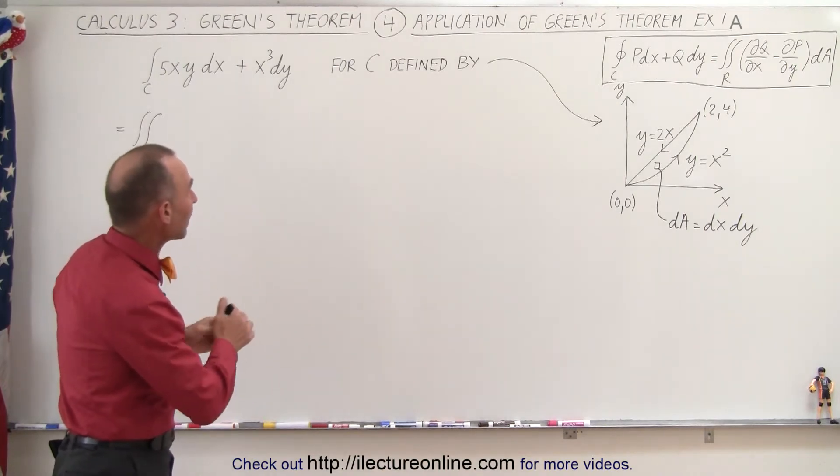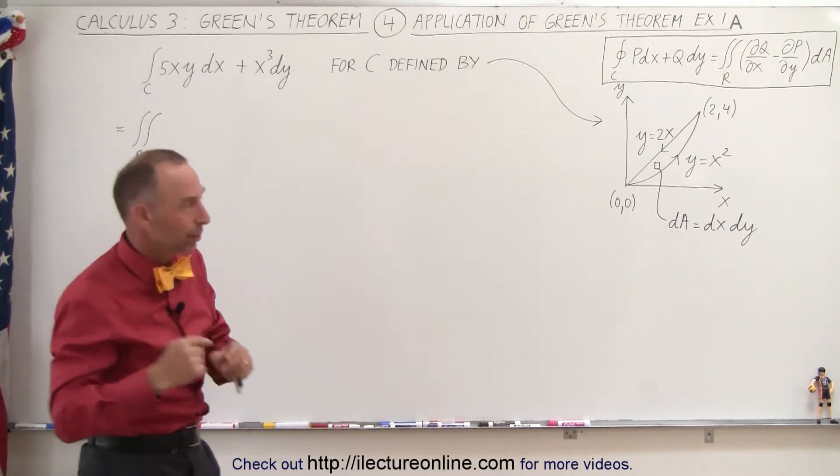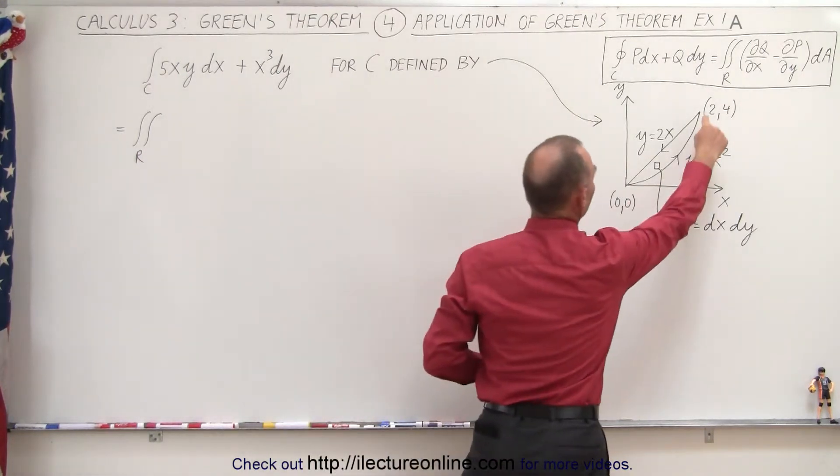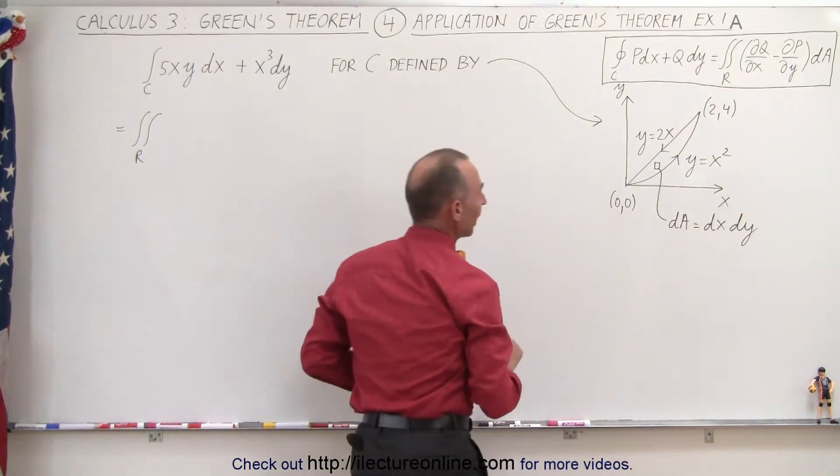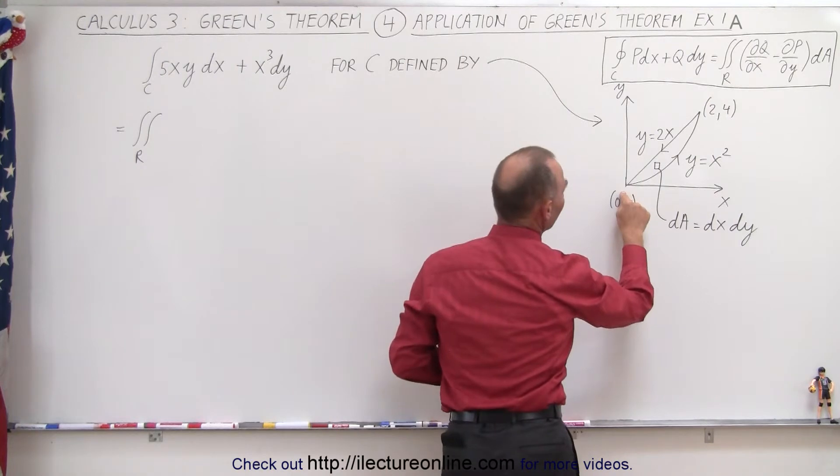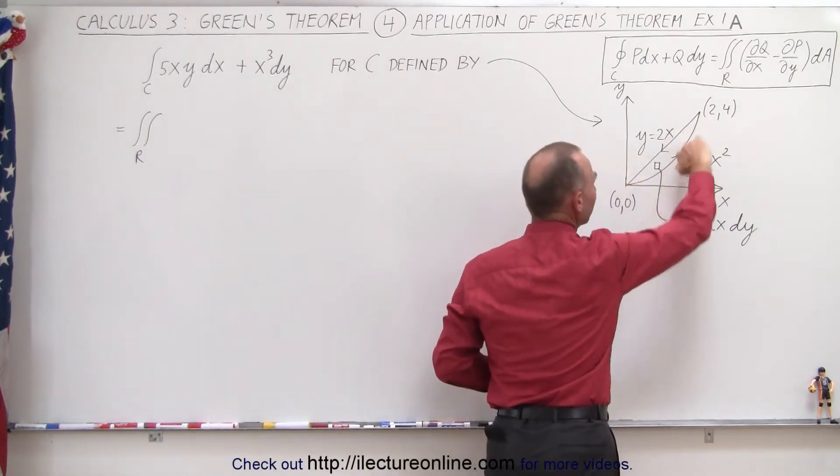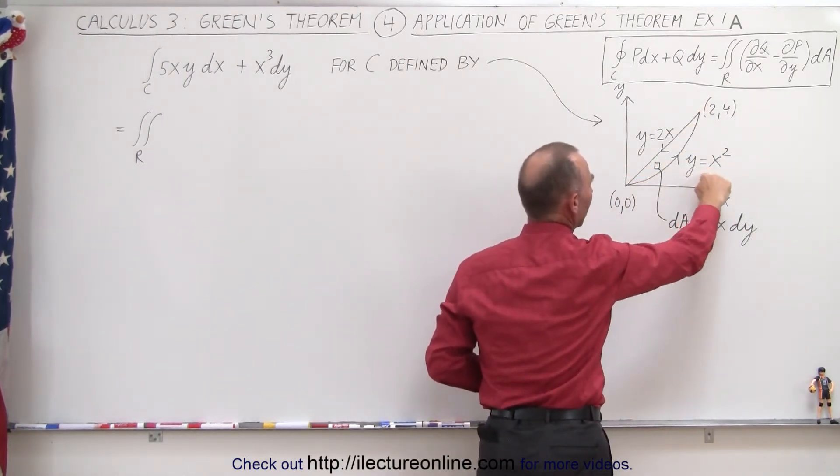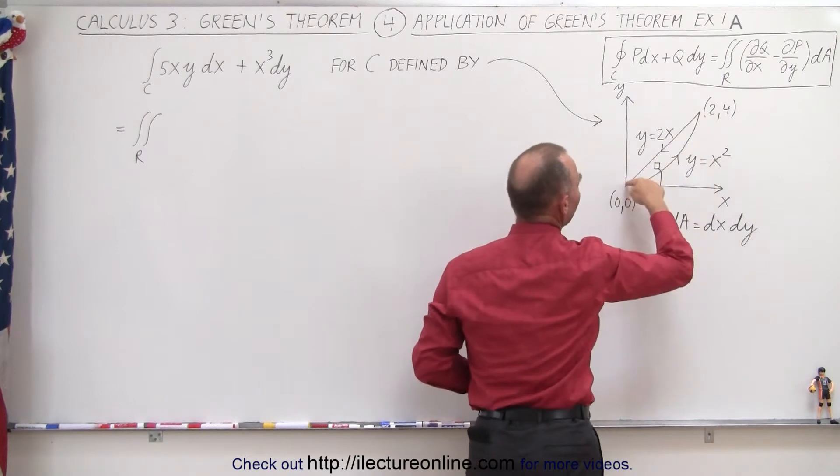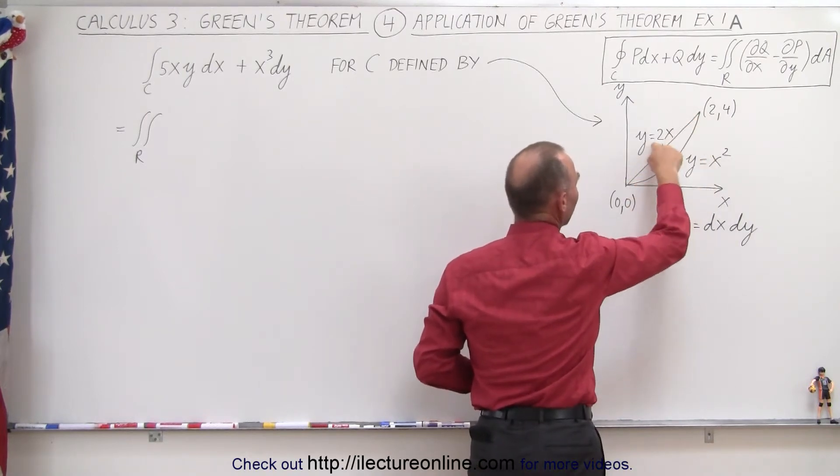We're going to integrate that over some curve, and of course it has to be a completely enclosed curve in order for us to use Green's theorem. Notice that we're going to integrate from (0,0) to (2,4) along the parabolic curve y = x², and then come back down along the line y = 2x.